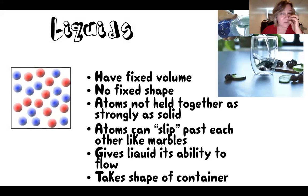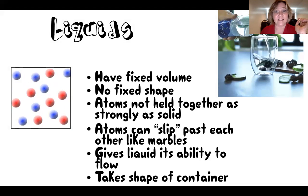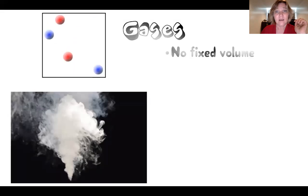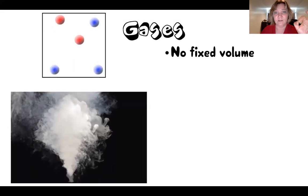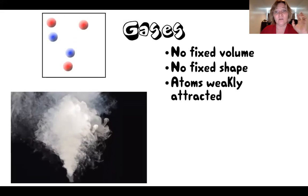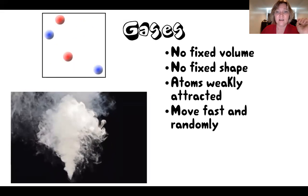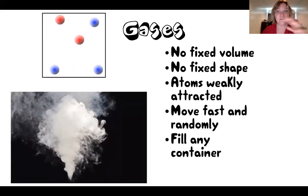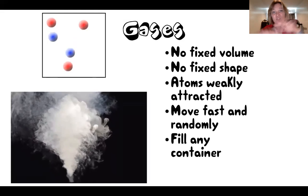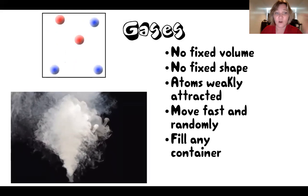Because liquids have the ability to flow, they take the shape of their container but still have a fixed volume. Gases do not have a fixed volume and do not have a fixed shape. This is because the atoms of a gas are very weakly attracted — they move quickly and randomly, so they fill any container. You can see that cloud of smoke which just eventually dissipates in the air: no fixed shape, no fixed volume.